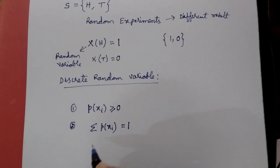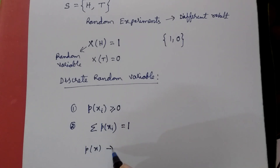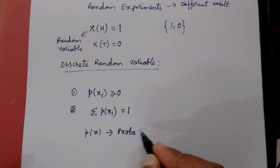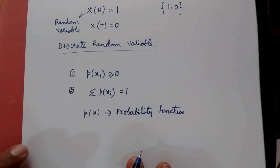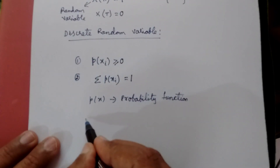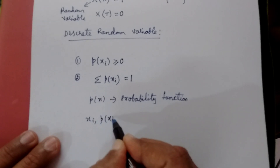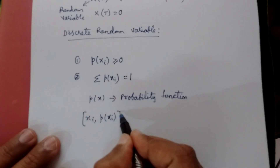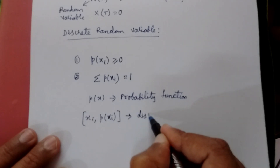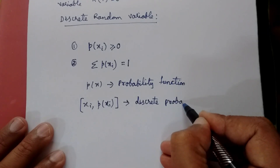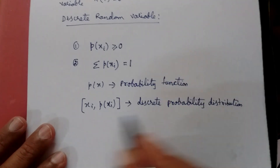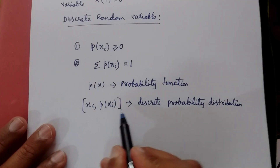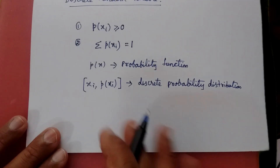This function — the probability of X — is called the probability function. The set of values where xi represents your random variable and P(xi) represents the probability of the random variable — this set of values is called the discrete probability distribution. The set of values of the random variable along with the probabilities is called the discrete probability distribution with respect to the random variables.